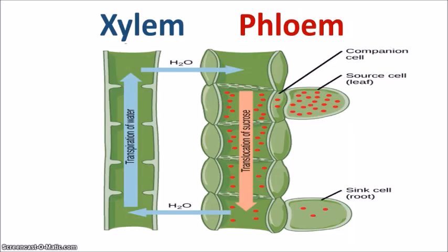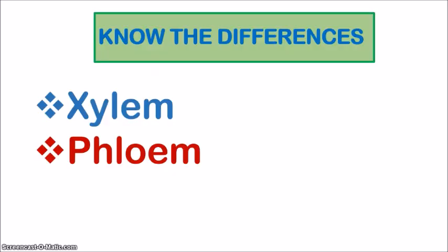Looking at both vessels together, you can see how they work together to transport materials. The xylem is responsible for transporting water along with minerals, and the transpiration stream helps with that — the water and minerals travel upwards. In the phloem, there is translocation of sucrose — the movement of sucrose from where it is made at the source, that is the leaves, to where it needs to be used in the sink, which is the roots and other parts of the plant. You should now understand the structural and functional differences of the xylem and the phloem.